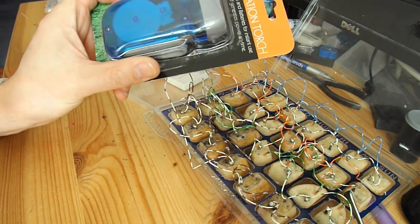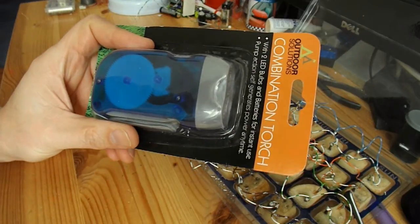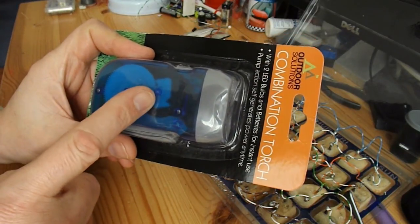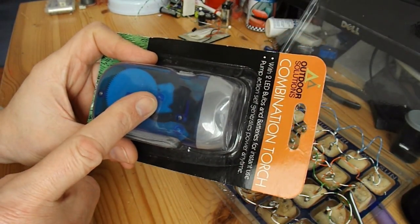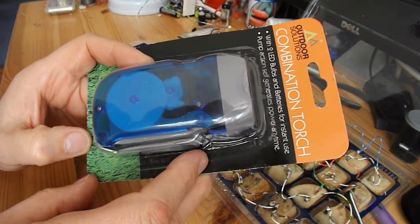I've got this cheap dynamo torch and what I'm going to do is take it apart, get the coil out of the middle of the dynamo and see if I can use that to push a magnet around.